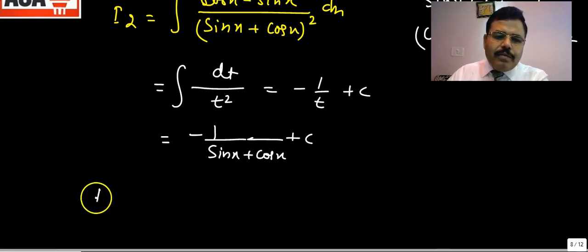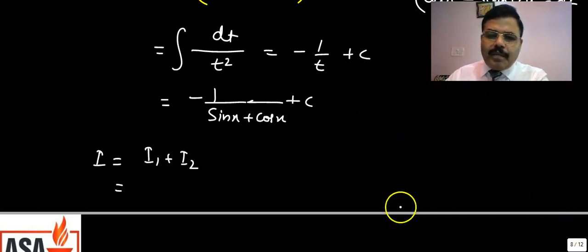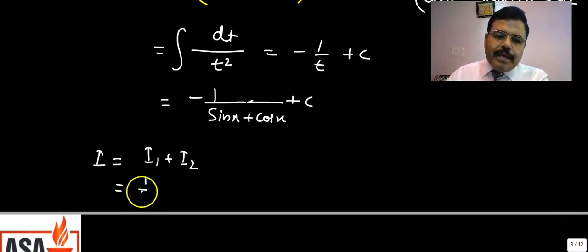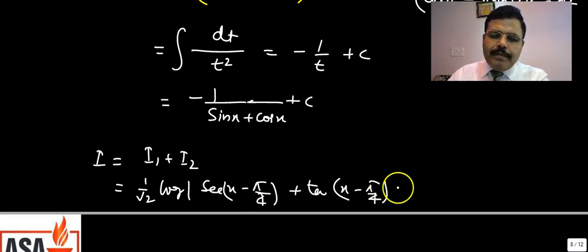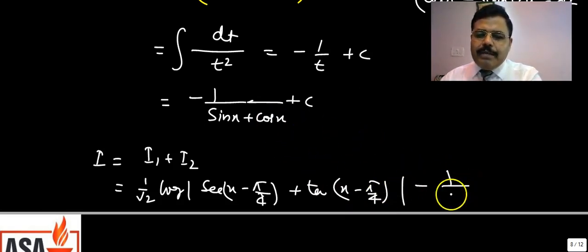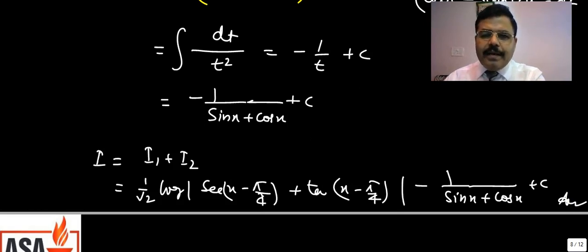Therefore, the final answer is I = I1 + I2 = (1/√2) · log|sec(x − π/4) + tan(x − π/4)| − 1/(sin x + cos x) + c. That is how this question can be solved. With patience and practice you can solve it in at most one and a half to two minutes.